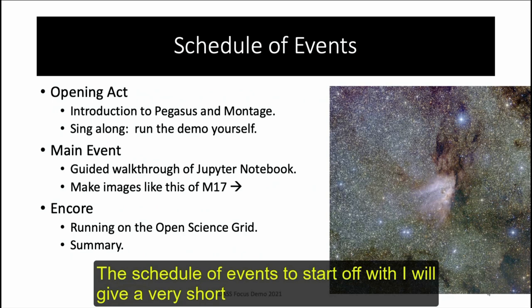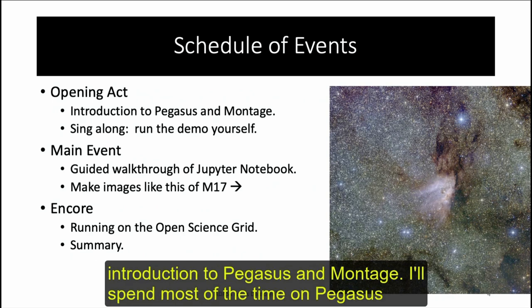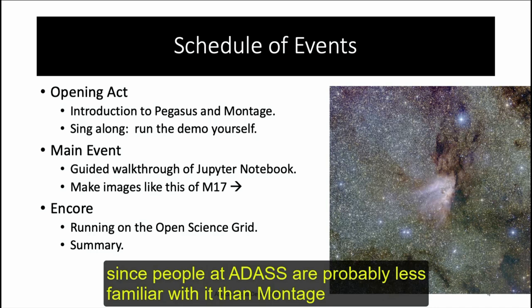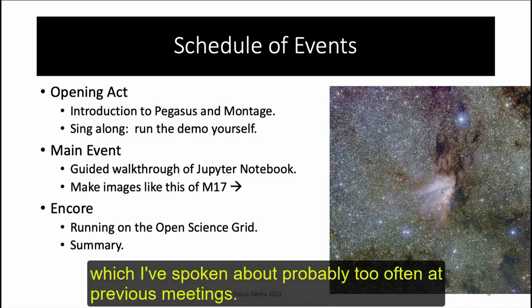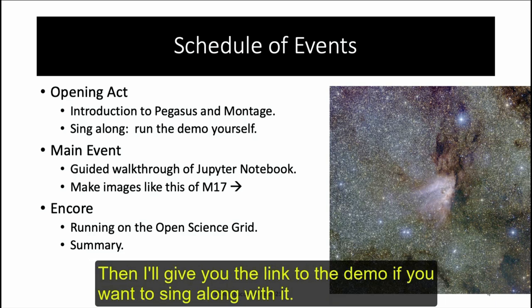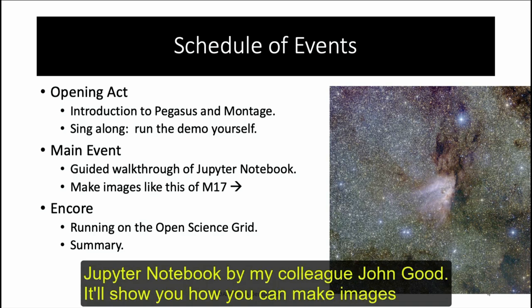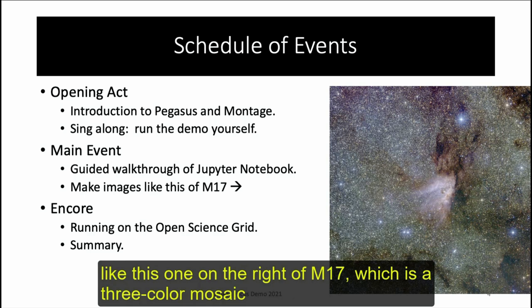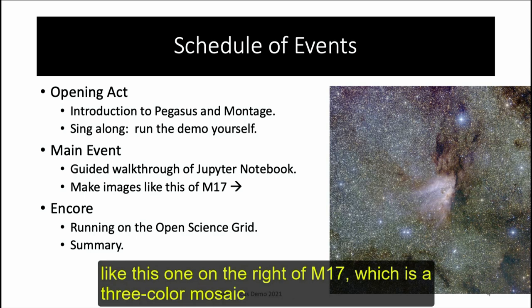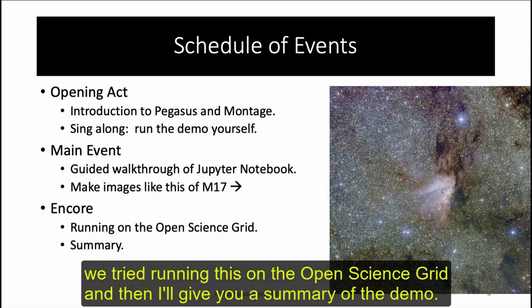The schedule of events: first, a short introduction to Pegasus and Montage, spending most time on Pegasus since people at ADAS are probably less familiar with it than Montage. Then I'll give the link to the demo. The main event is a guided walkthrough of the Jupyter Notebook by my colleague John Goode, showing how to make images like the M17 three-color mosaic made from 2MASS data. Finally, I'll describe running this on the Open Science Grid and give a summary.